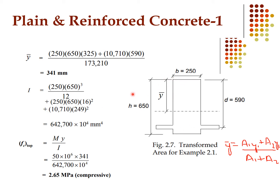Plugging in: A₁ = 250 × 650 with Y₁ = 650/2, and A₂ = (n − 1) × As with its centroid at 590 mm from the top surface, divided by the total area A₁ + A₂. We get Ȳ = 341 mm from the top compression face.